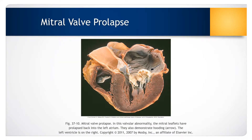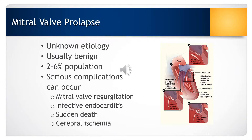With mitral valve prolapse, there is an abnormality of the mitral valve leaflets — the leaflets prolapse or buckle back into the left atrium during systole. There is no known cause for mitral valve prolapse, and usually it is benign. It only occurs in about 2% to 6% of the U.S. population. Although it is usually benign, there can be serious complications, including mitral valve regurgitation, infective endocarditis, sudden cardiac death, and cerebral ischemia.